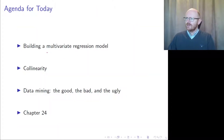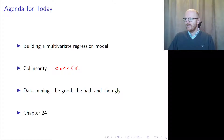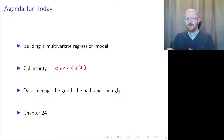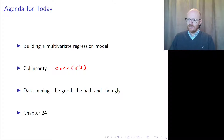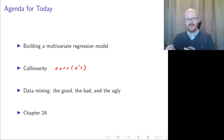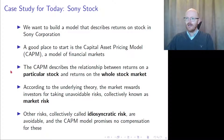What we're going to do is build a multivariate regression model and look into collinearity — the correlation between X variables. We'll also look into data mining, where you have a lot of data and use regression to make sense of it. In data mining, you often don't have a model first and then look for data; instead, you have a hunch that something might fit into a model and explore the data for ideas. This is chapter 24.